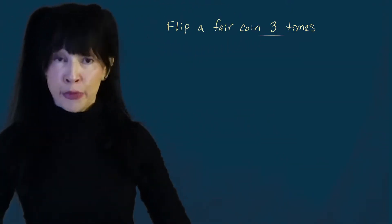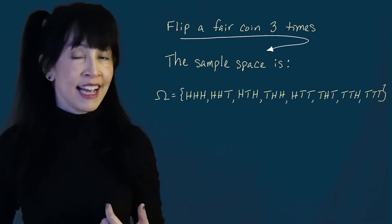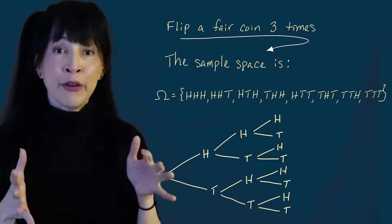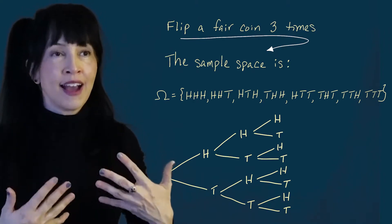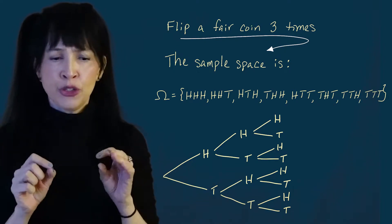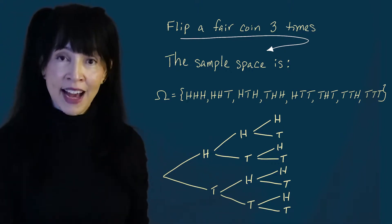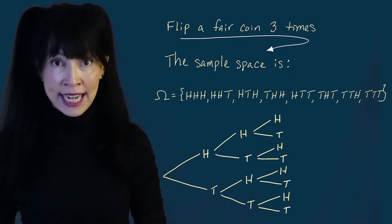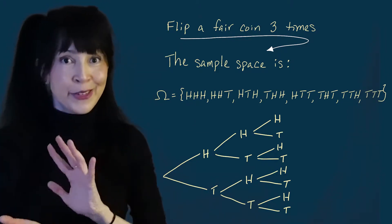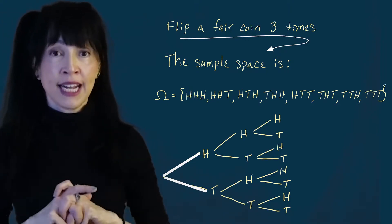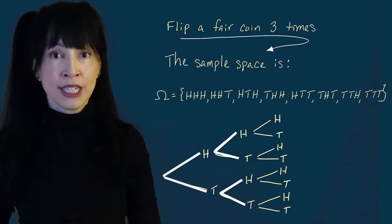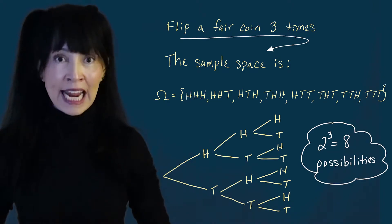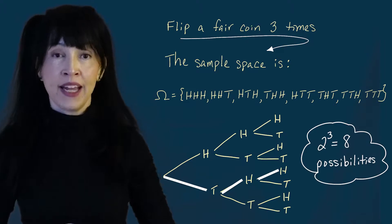Suppose I flip a fair coin three times. The possible outcomes include heads-heads-heads, heads-heads-tails, and so on. There are eight possible outcomes, and I know that without even listing them because I can make a tree diagram. Unlike previous tree diagrams where outcomes were used up — for example, placing friends in a line — here, getting heads or tails on the first toss doesn't use up the possibility for the next toss. So I get two branches for the first toss, two on each for the second, and two on each of those, for a total of two times two times two, or two cubed, or eight possible outcomes.